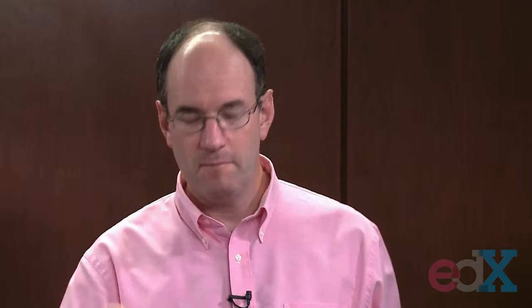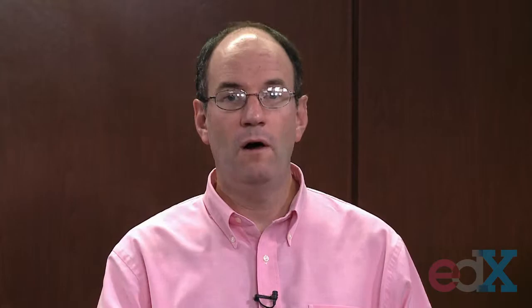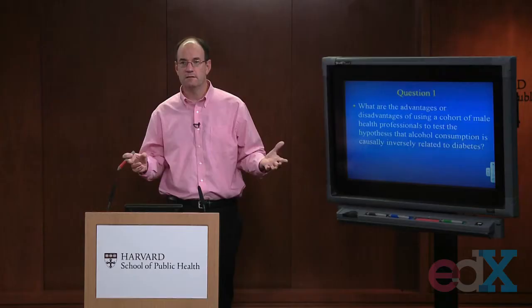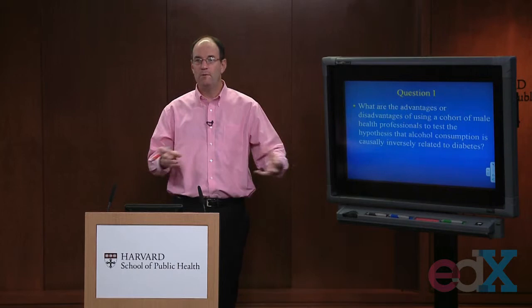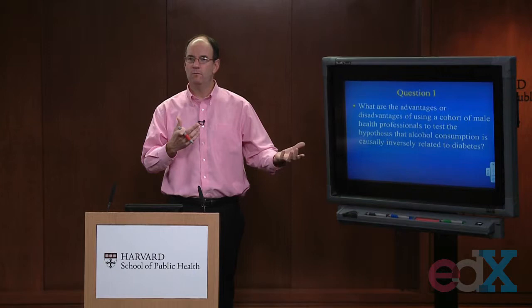Question one: what are the advantages or disadvantages of using a cohort of male health professionals to test the hypothesis that alcohol consumption is causally inversely related to diabetes? These are dentists, veterinarians, and optometrists from across the United States — this is not NHANES, which represents a national sample of the U.S. Why would it be good to use health professionals? Why might it not be good? Does your interpretation of the results change knowing this is health professionals rather than a general population sample?